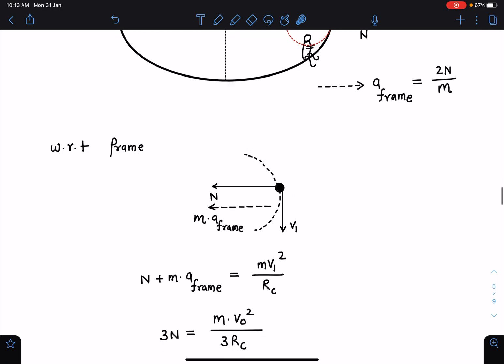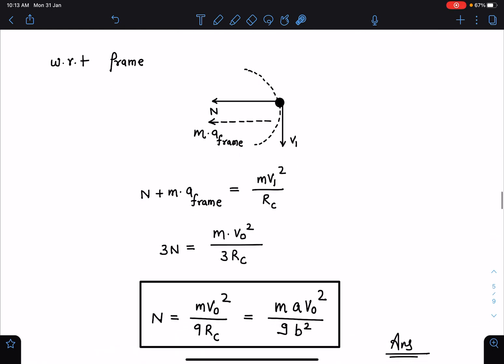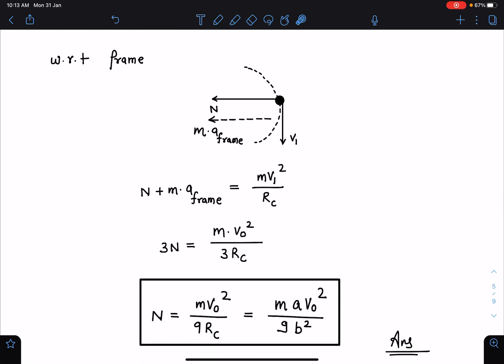This pseudo force also will come into picture, m times acceleration of frame, and the frame remains in this orientation because of symmetry. So now I can write N plus ma frame is equal to mv1 square by rc. When I substitute these values, I am getting N as mv0 square by 9 rc. Because v1 is v0 by root 3, so here v0 by 3 will come. When I substitute the rc value, this will become m a v0 square by 9 b square.